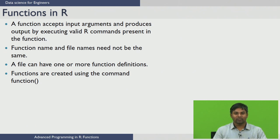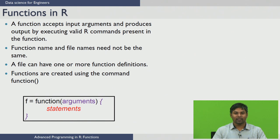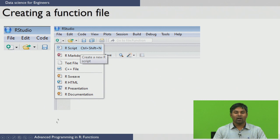In R, when you are creating a function, the function name and the file in which you are creating the function need not be the same, and you can have one or more function definitions in a single R file. Functions are created in R by using the command 'function'. The general structure is: f = function(arguments) followed by statements to be executed. Here f is the function name, which takes certain arguments and executes the following statements.